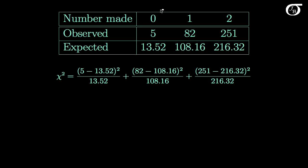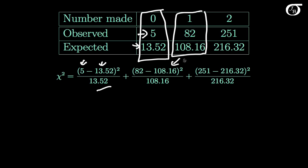For the first cell, we take the observed count of 5, subtract the expected count of 13.52, square the difference, and divide by 13.52. We then do similar calculations for the other two cells. Carrying out all of these calculations, our chi-square test statistic is equal to 17.26.